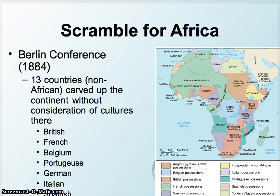Continuing our discussion of colonialism in Africa, we talked about how there was initially contact along the coast but very little interest by Europeans into the continent itself. That began to change with the Industrial Revolution. By the 1880s, the Europeans held the Berlin Conference, where 13 of the major powers within Europe basically took a map of Africa and drew lines on it to claim different possessions, with no African representation at the table whatsoever, paying no attention to the cultures, societies, and African states that existed on the ground.